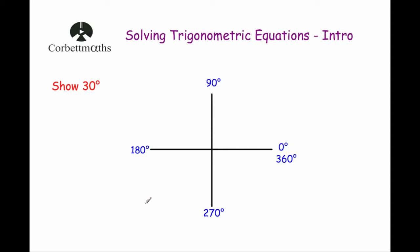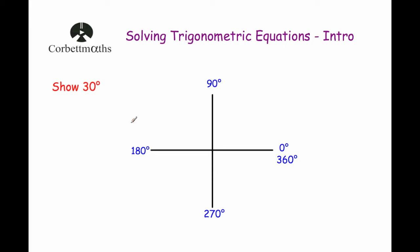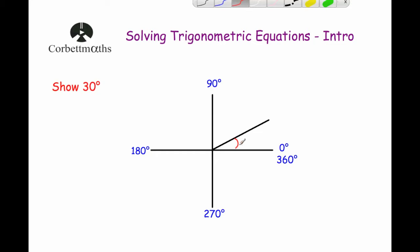We're going to start off by looking at this diagram, which forms the basis of the CAST Diagram. We've got our four quadrants, starting at zero degrees, and going around anti-clockwise: 90 degrees, 180 degrees, 270 degrees and back to 360. You could carry on to 450 degrees, 540, and so on. You can also have negative angles, going clockwise, which we'll talk about in another video. Let's look at how to show an angle on this CAST Diagram — for example, the angle 30 degrees would be measured from the zero line, going up into the first quadrant.